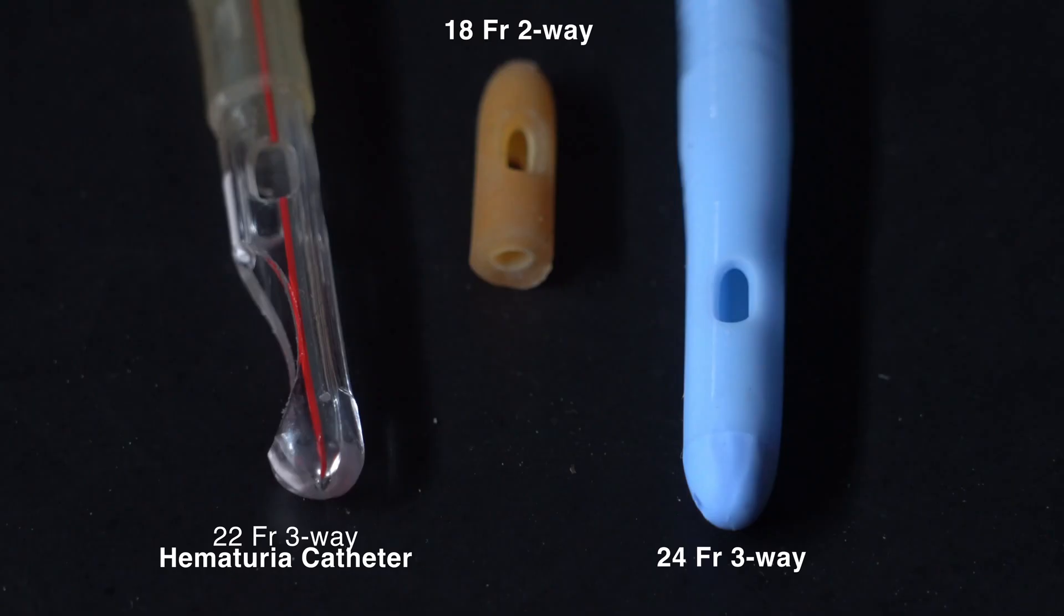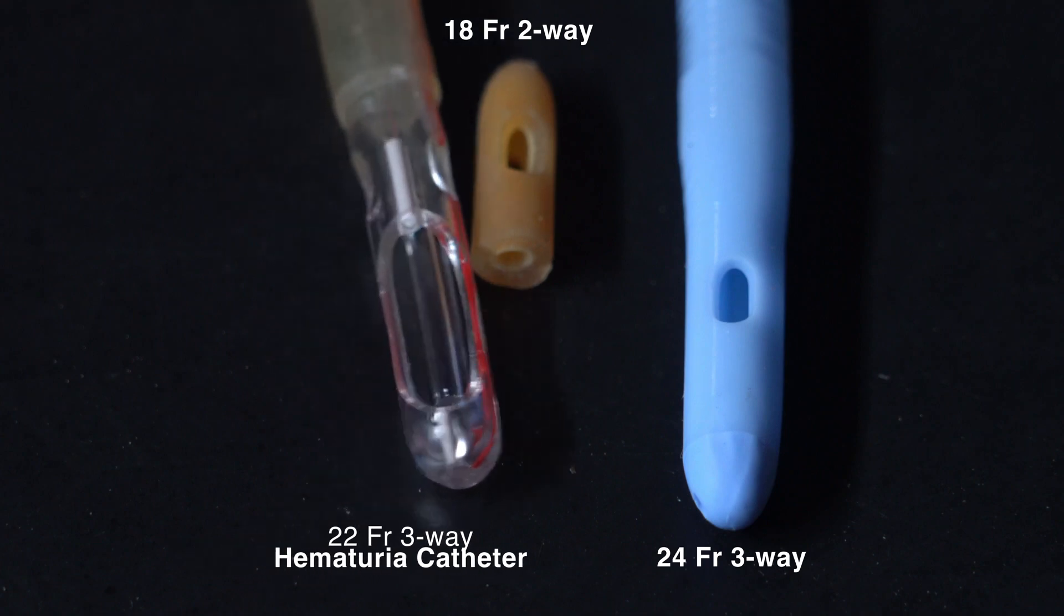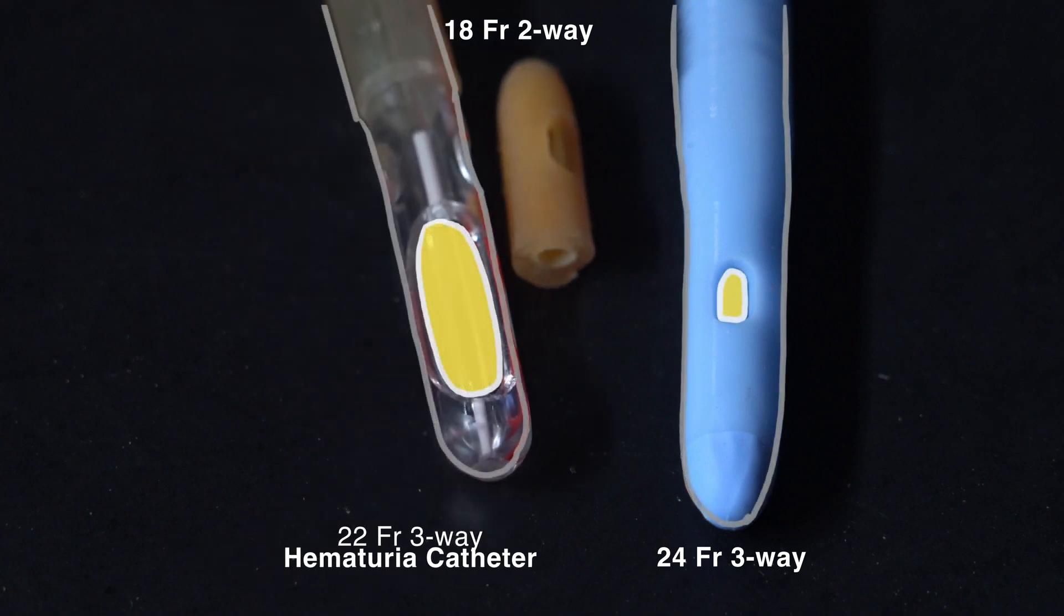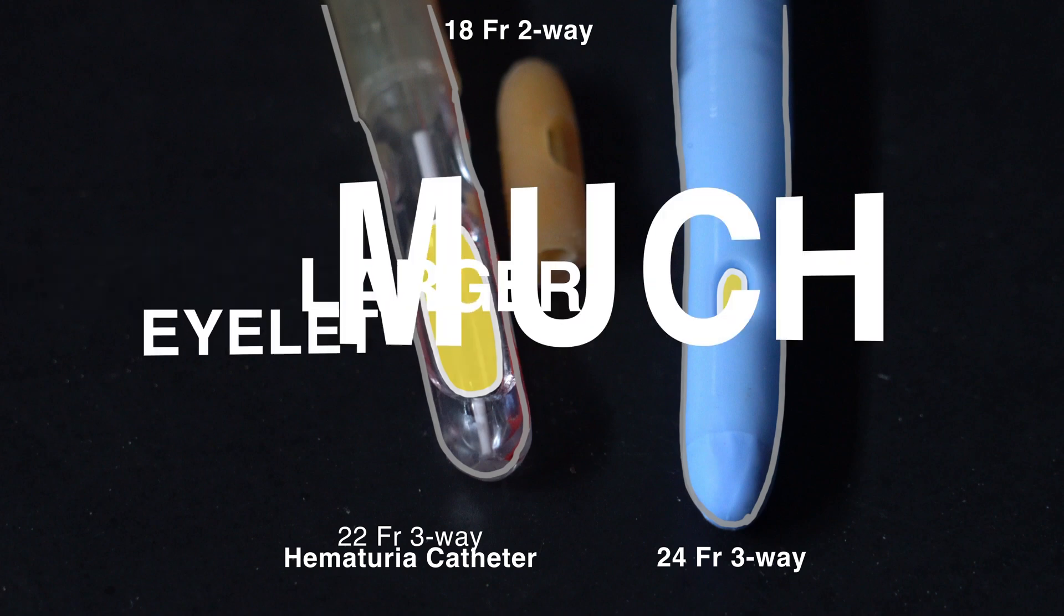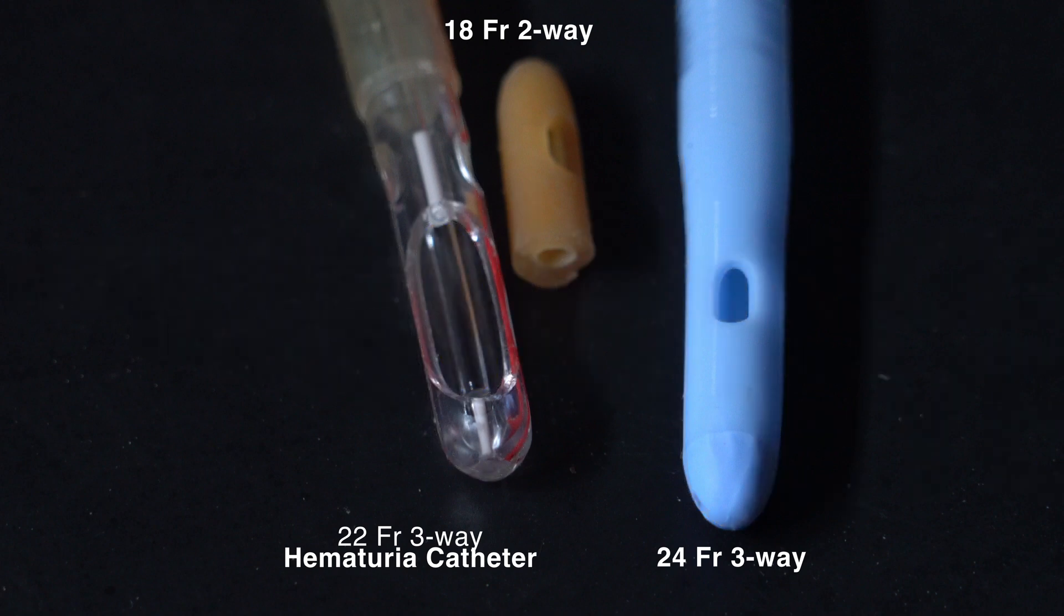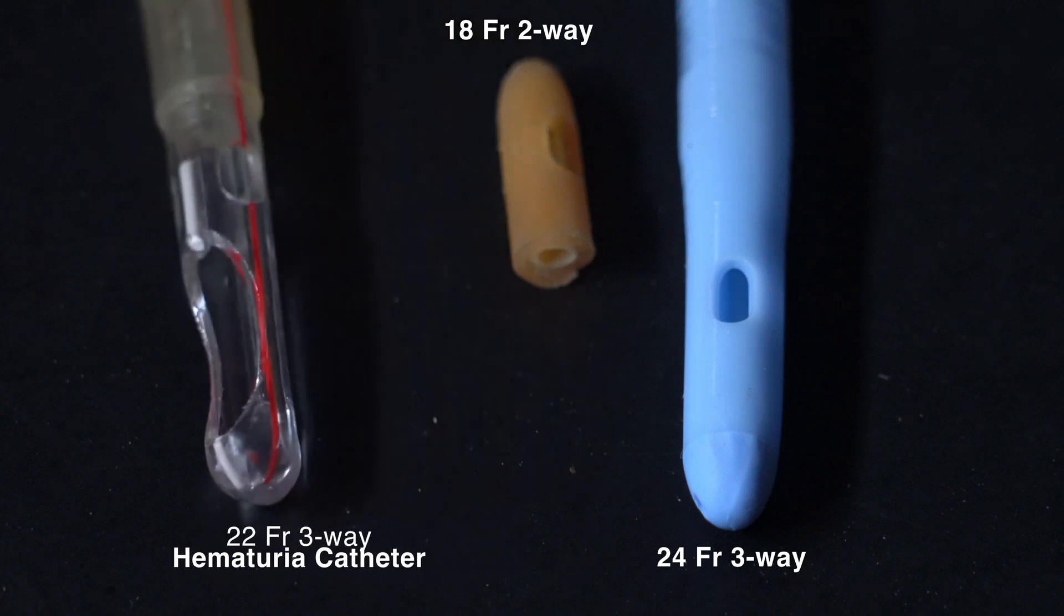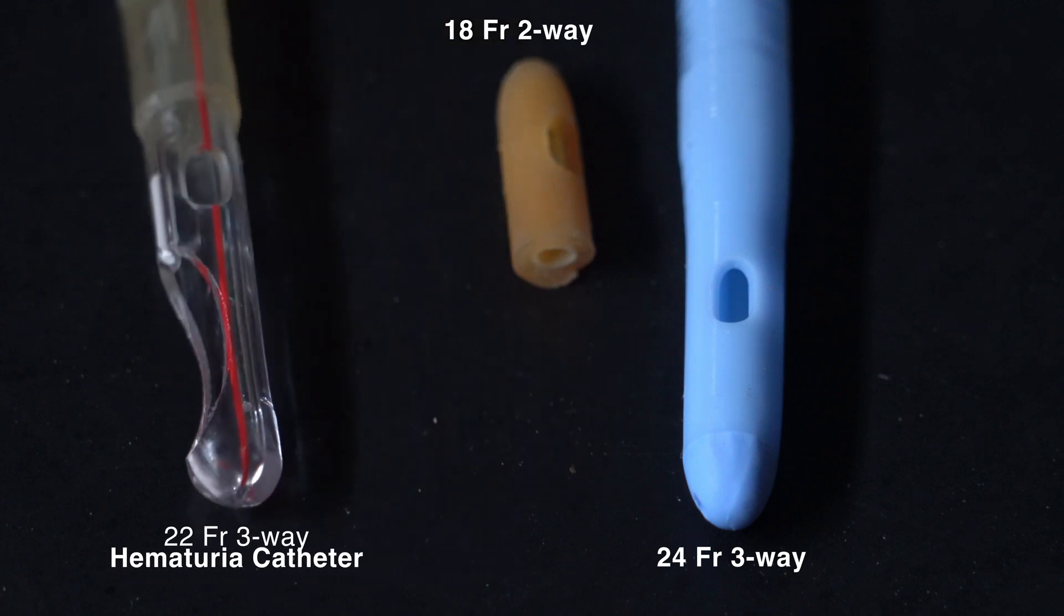Generally, these catheters also have a larger opening at the tip of the catheter to allow removal of larger blood clots. Just because the catheter is larger does not mean it's designed as a hematuria catheter. On the left, here we have a 22 French three-way hematuria catheter. Notice the very large eyelet size, which is ideal to remove large clots. In the middle is an 18 French Foley catheter for comparison and on the right is a 24 French three-way Foley catheter. This one is not a hematuria designation and notice the smaller eyelets, which would make moving clots much more difficult.